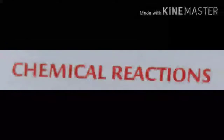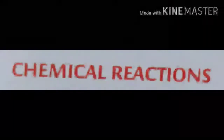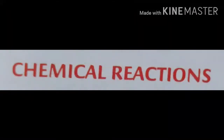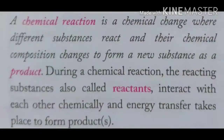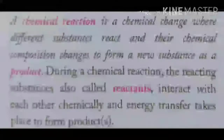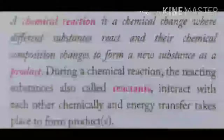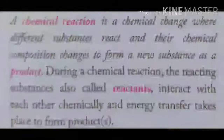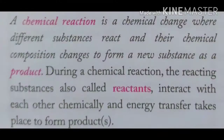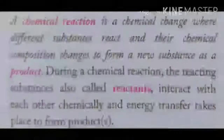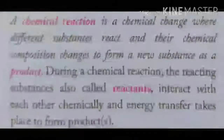In the last chapter we learned about chemical changes. A chemical change is a change which produces a new substance. A chemical reaction is a chemical change where different substances react and their composition changes to form a new substance called the product.